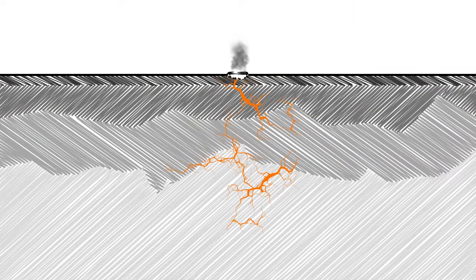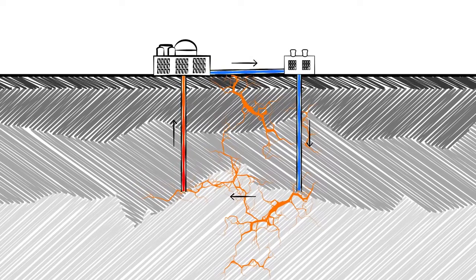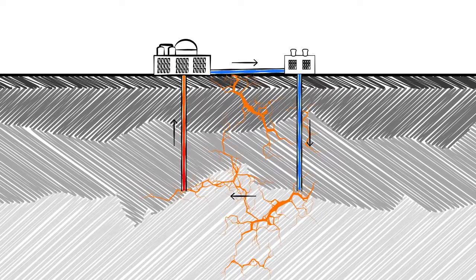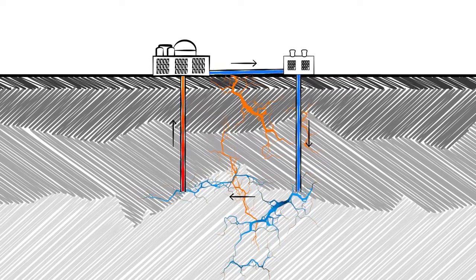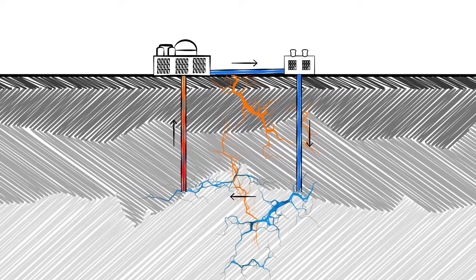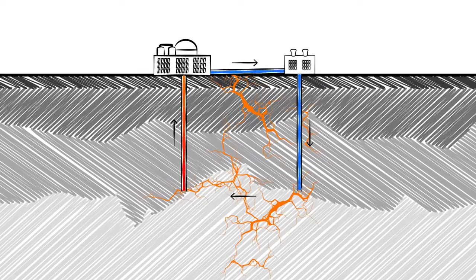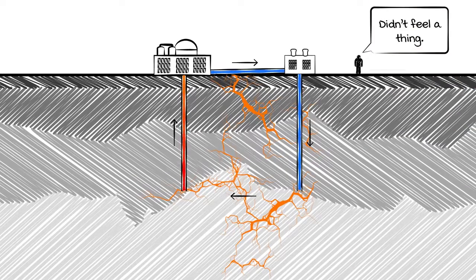Geothermal systems experience seismicity as part of their natural function. When humans intervene in these systems to harvest power from them or seek to create engineered subsurface reservoirs like an EGS, small man-made earthquakes, called induced seismicity, are relatively common and typically go unnoticed by humans.